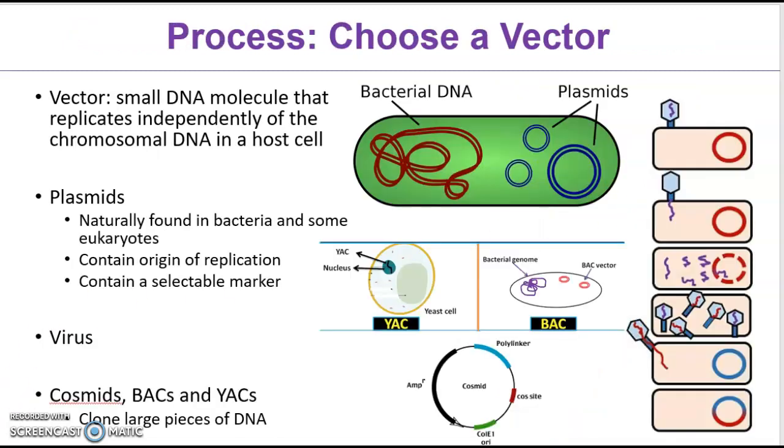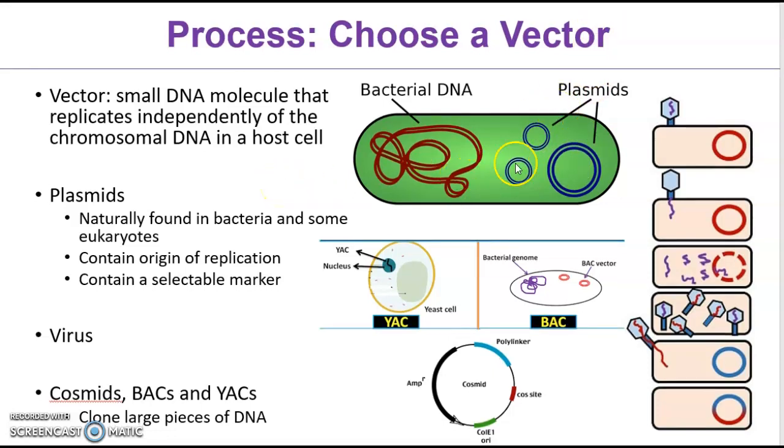Then, like I said, this is by a vector. So you have to identify the vector that you're going to use. A vector is a small DNA molecule like a plasmid. We talked about plasmids in the bacteria genetics chapter. Plasmids can be used as vectors. They're extra chromosomal DNA found in bacteria. They have an origin of replication and they can have a selectable marker like antibiotic resistance. It can also be a virus.